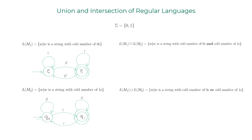Let me show you the DFA that accepts the intersection language. You can verify through visual inspection that this DFA accepts strings that have an odd number of zeros and an odd number of ones.